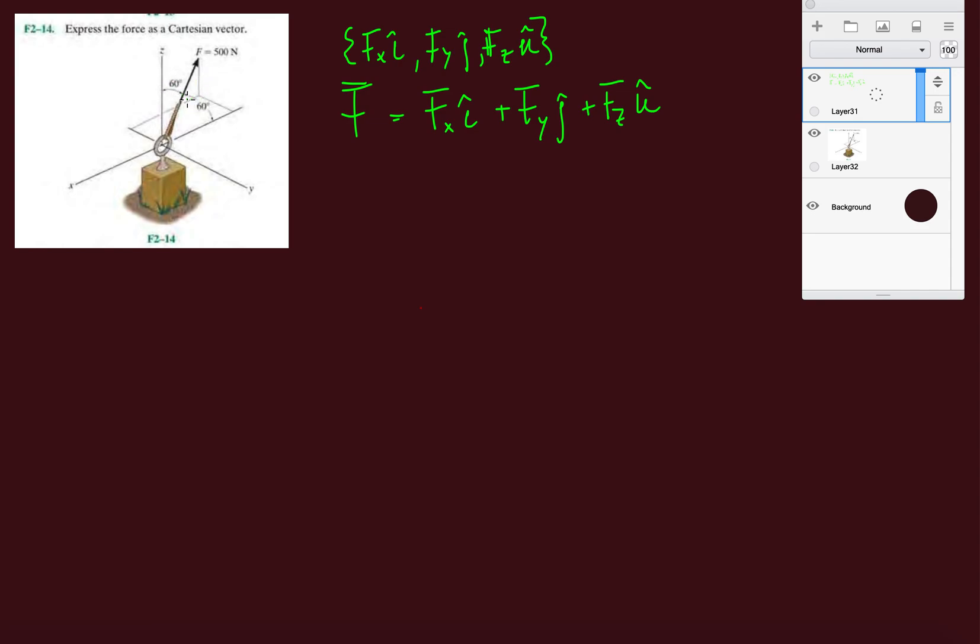Here they give us an angle of 60 degrees with the positive z-axis and an angle of 60 degrees with the negative x-axis. We're looking at alpha, beta, and gamma for the principal coordinate angles. We know gamma is going to be 60 degrees because the coordinate angles are measured from the positive x, y, and z axes.